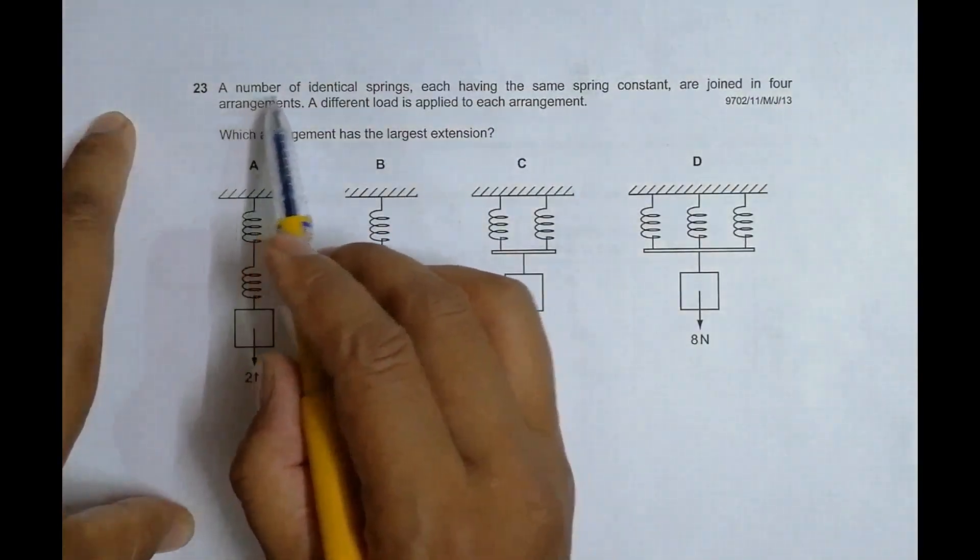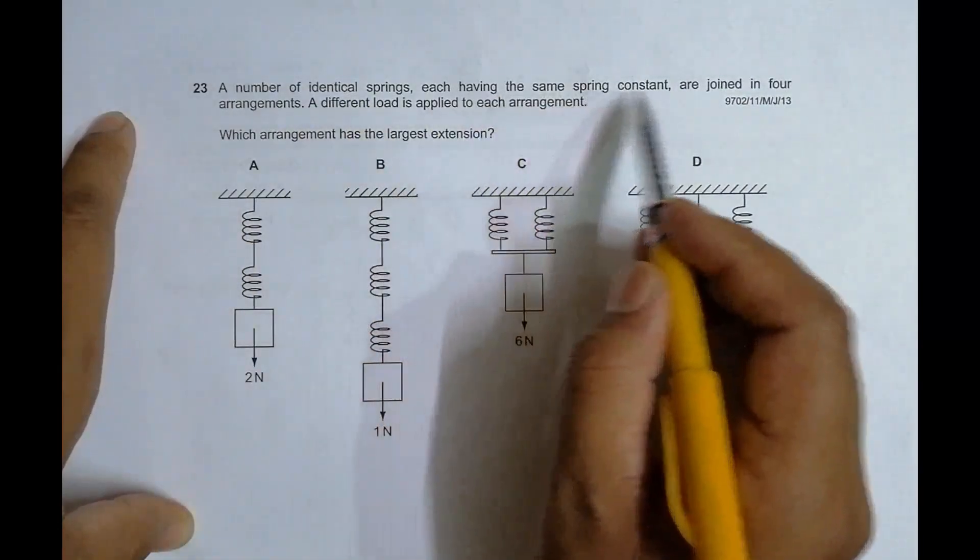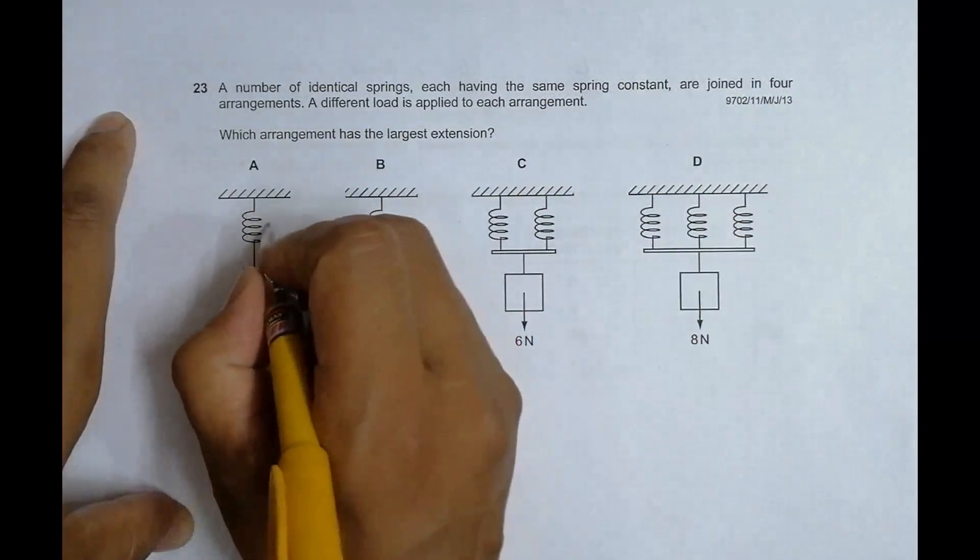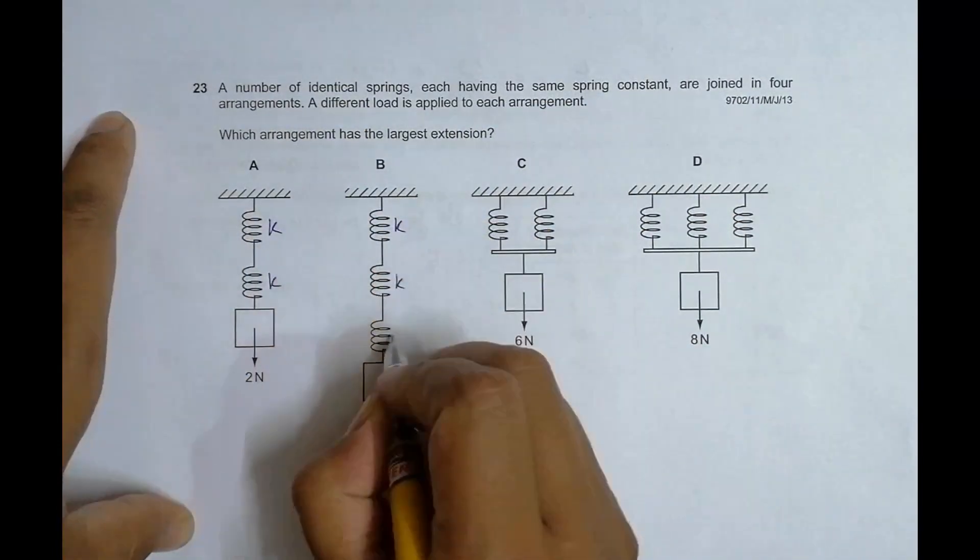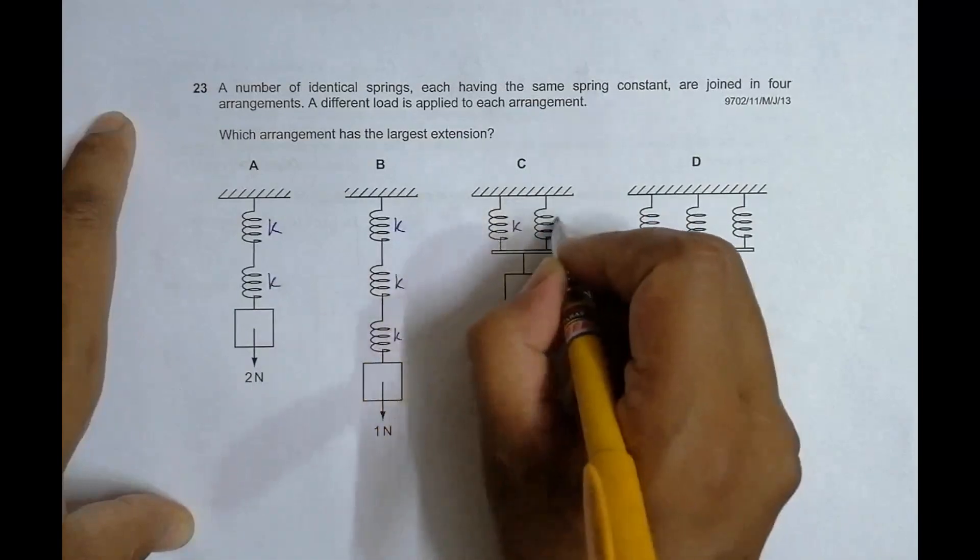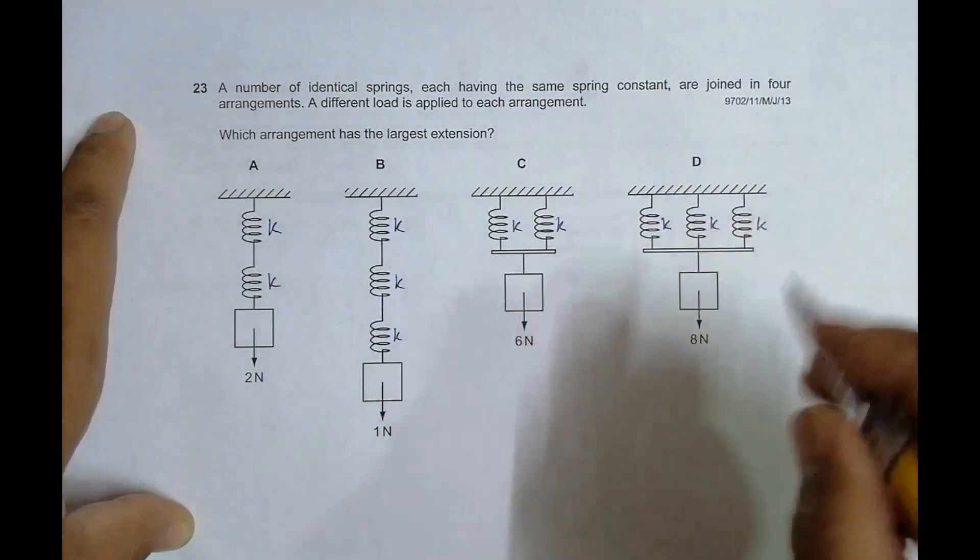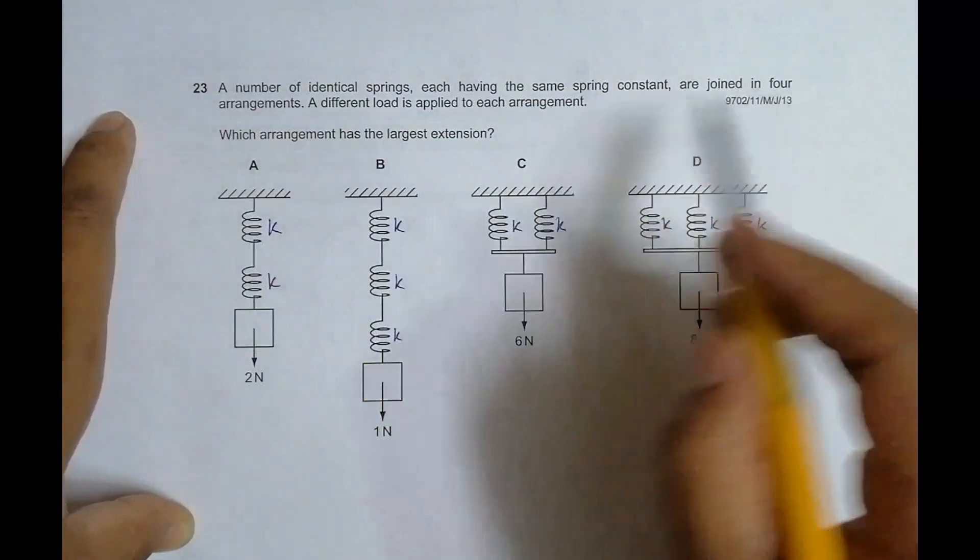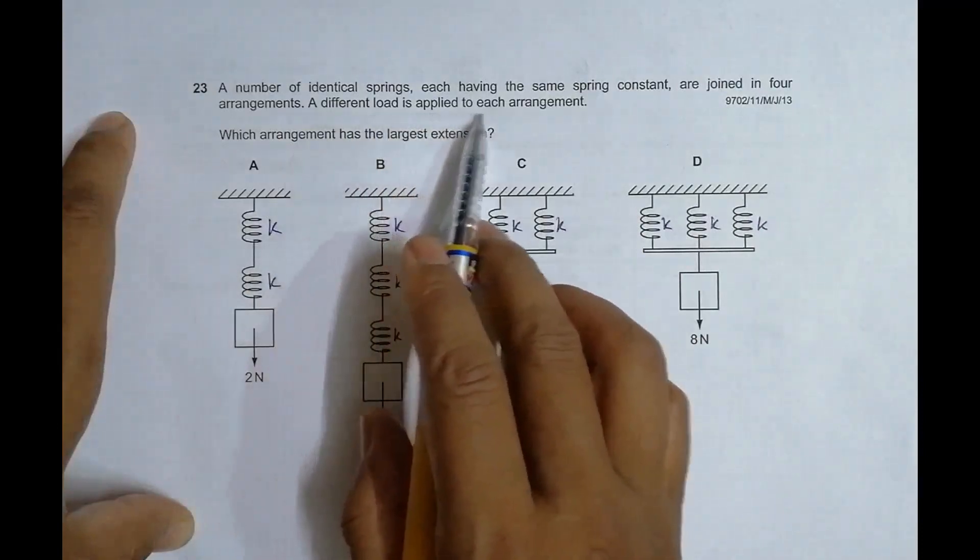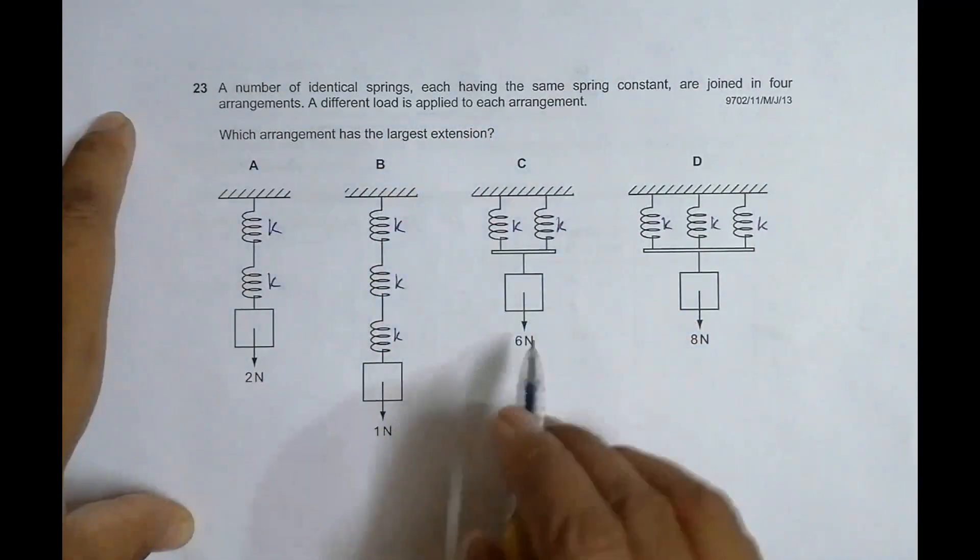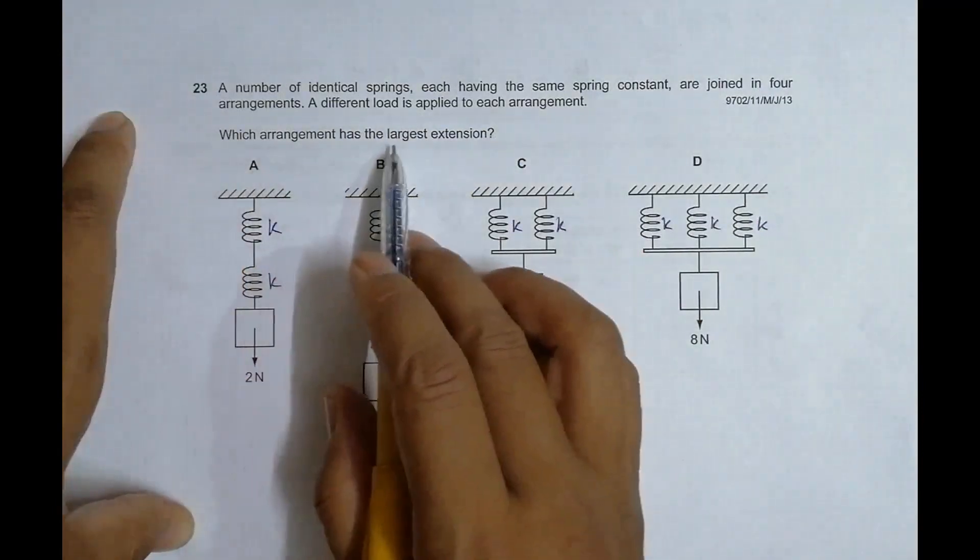A number of identical springs, each having the same spring constant K, are joined in four arrangements. A different load is applied in each arrangement. We have to identify which arrangement has the largest extension.